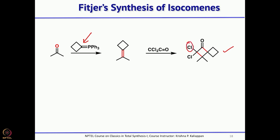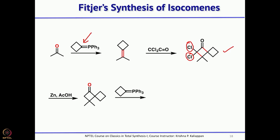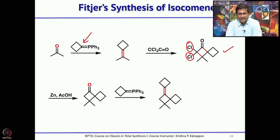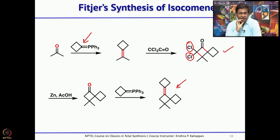The two chlorine atoms are not needed — they were used to stabilize the ketene. Once that purpose is served, the chlorines are removed by treatment with zinc and acetic acid, giving the spirofused bicyclic ring. Next, another Wittig with a homocyclobutane-derived phosphorus ylide using triphenylphosphine and butyllithium gives the Wittig product. The resulting molecule has 3 four-membered rings — 2 are spirofused and 2 are interconnected with the double bond. Then treatment with MCPBA gives the corresponding epoxide.